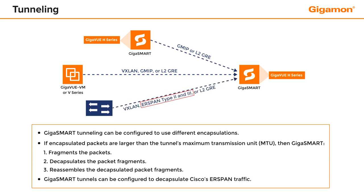GigaSmart tunnels can also be configured to decapsulate Cisco's ERSPAN traffic, and the tunnel traffic is forwarded to tools.